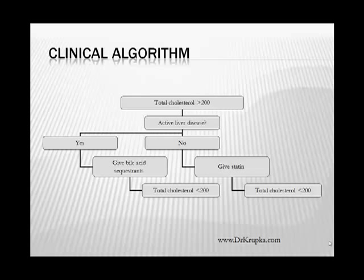Here's an example of an algorithm. Total cholesterol greater than 200 — you simply ask do they have active liver disease or not. If they do, you give one medication, you get a cholesterol lower than 200. If they don't, you give a statin drug, you get a cholesterol level lower than 200. It seems very simple, but unfortunately there are multiple other variables that aren't accounted for. It's kind of a simple yes-no flow chart that takes you through treating somebody's issues.